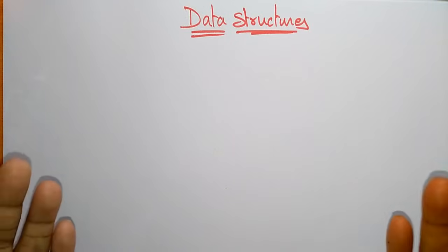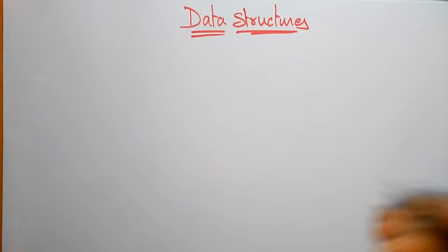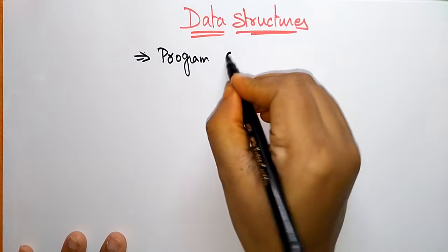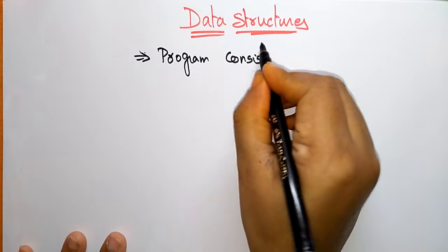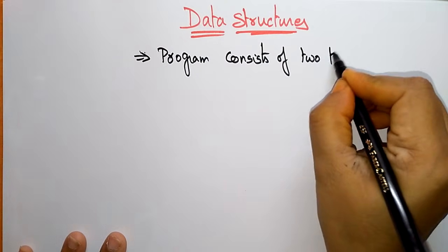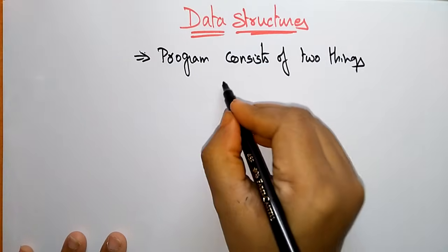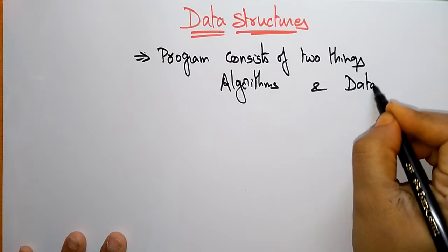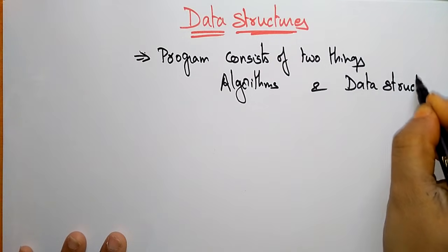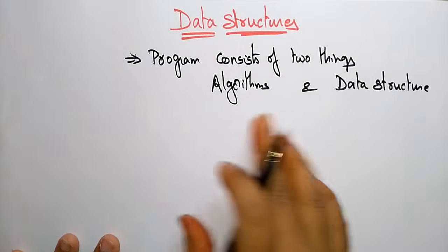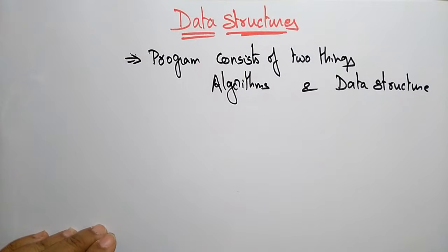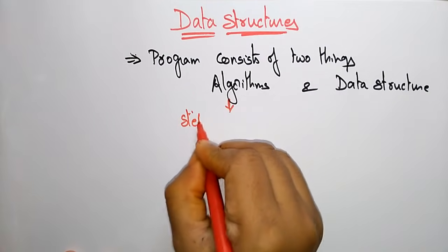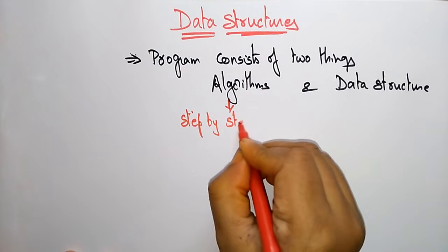Before going to explain what exactly a data structure is, first you need to know what a program consists of. If you take any program, it consists of two things: one is algorithms and the other is data structures.